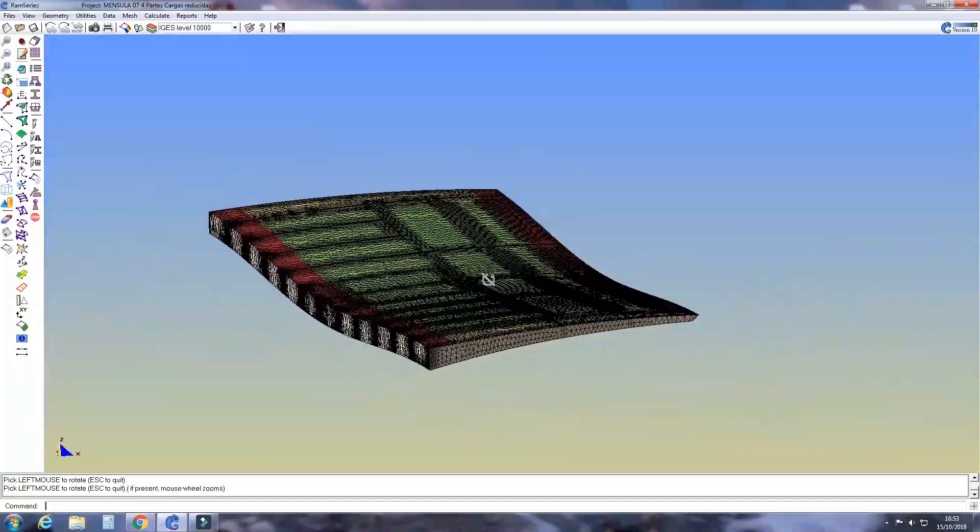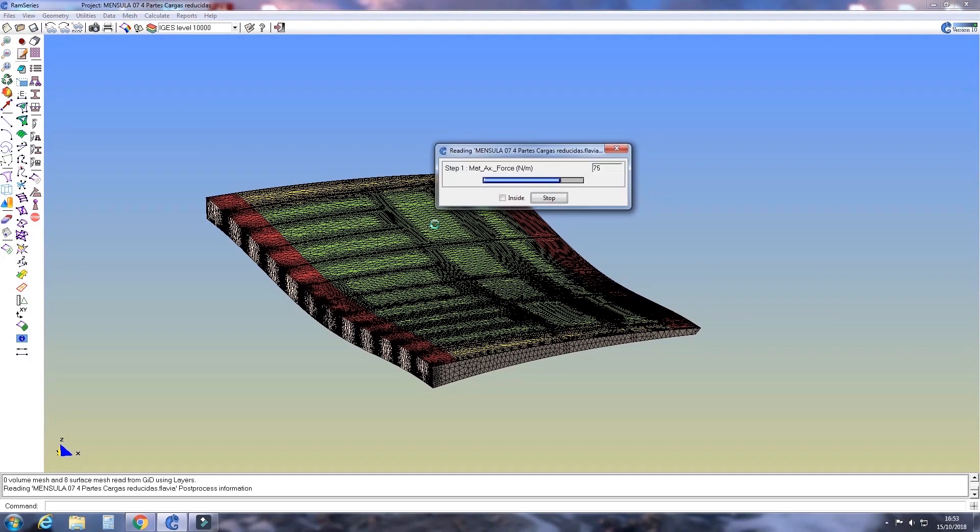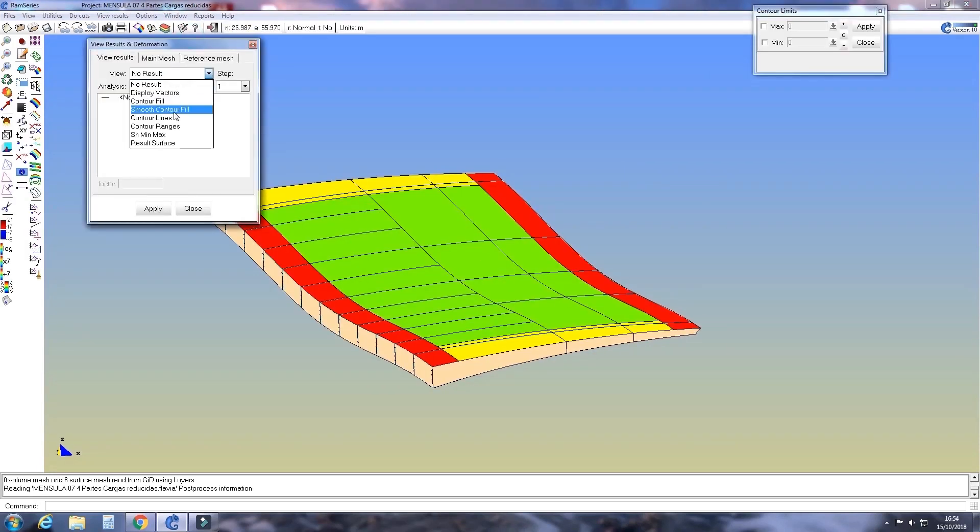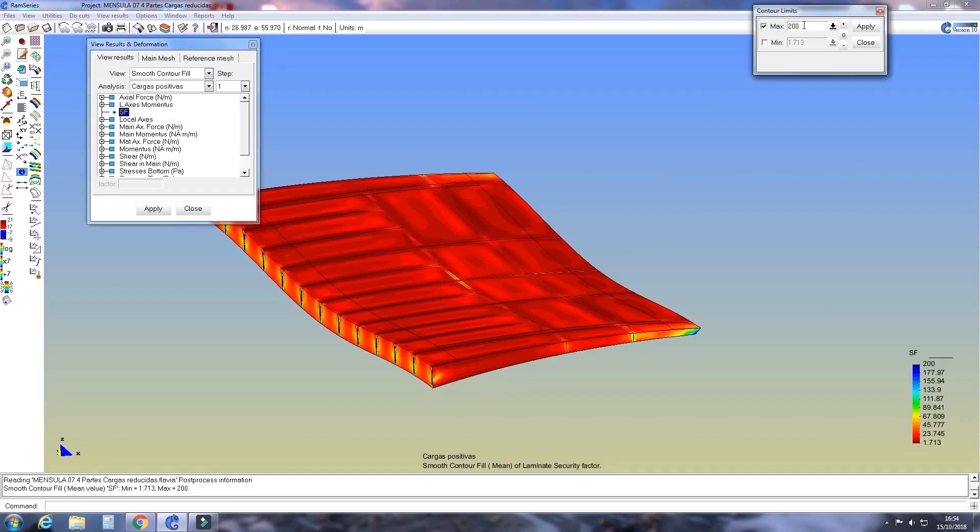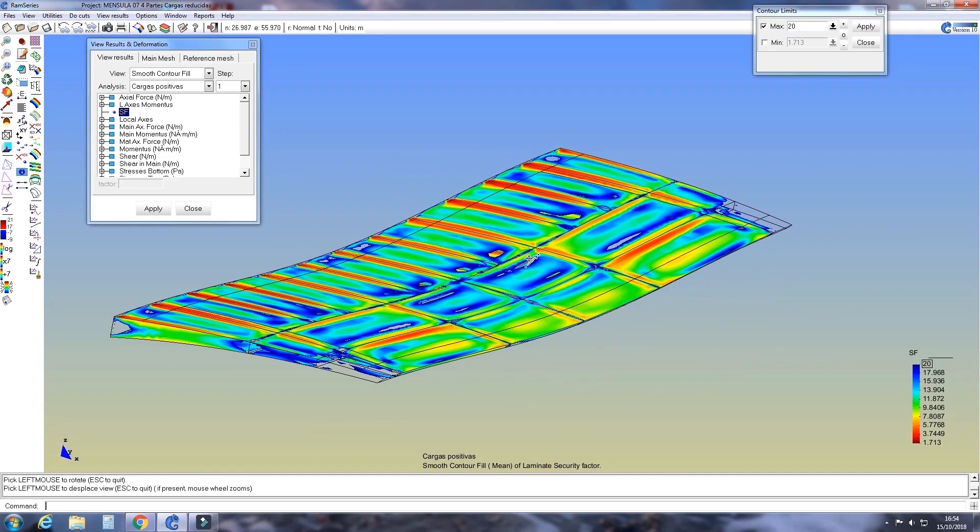Once the final design of the canopy was approved, the part was 3D modeled. The objective is to analyze the performance of the canopy with finite element analysis tools.